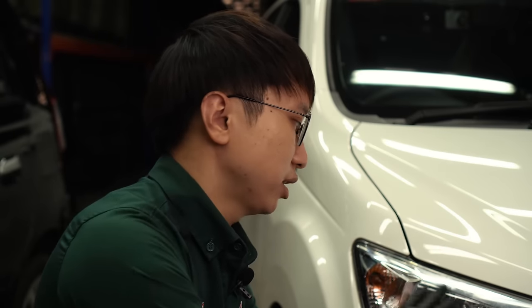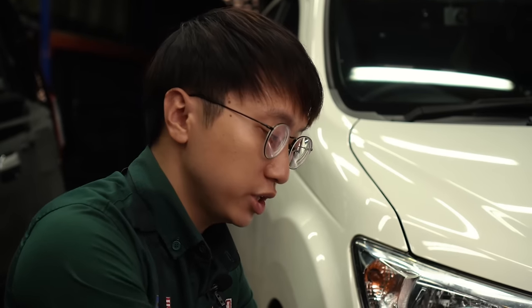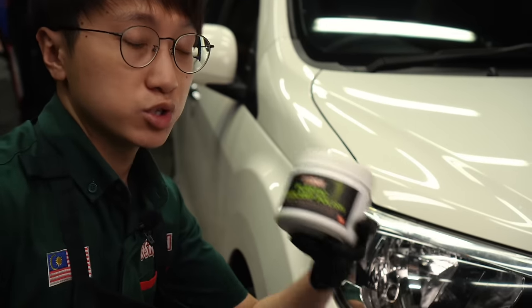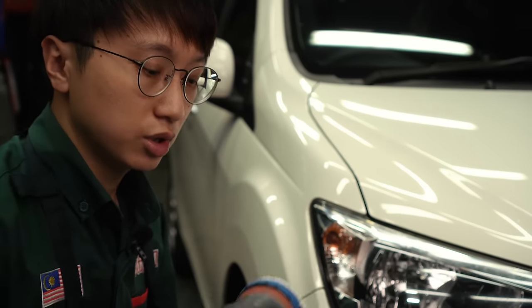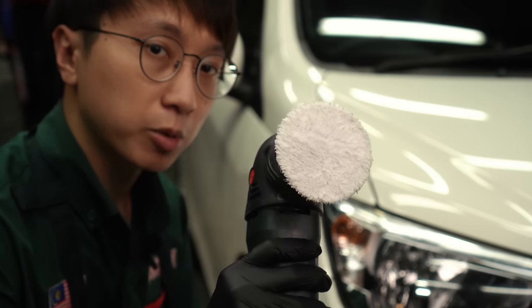For lightly oxidized headlight such as this, you can probably just get away with polishing. So I'm just gonna use some Austrian plastic headlamp polish and a DA with a microfiber pad.